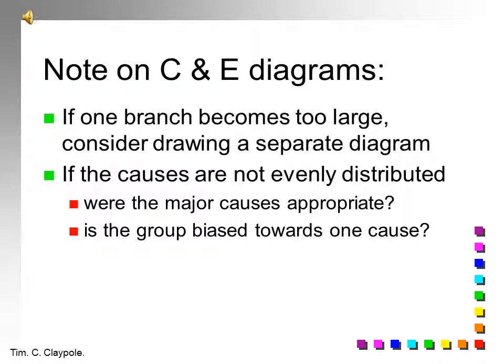A few words of caution with cause and effect diagrams. If one branch becomes too large, you might consider drawing it on a separate diagram. And if the causes are not evenly distributed, you have to consider, did you actually select the right major causes? Or do you have a group which is particularly biased towards one cause? In which case, they can only see it from their point of view.